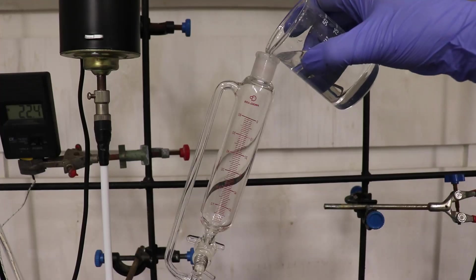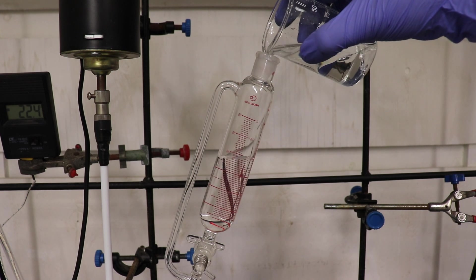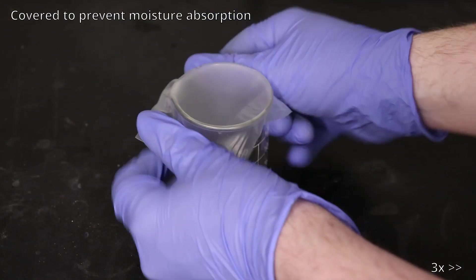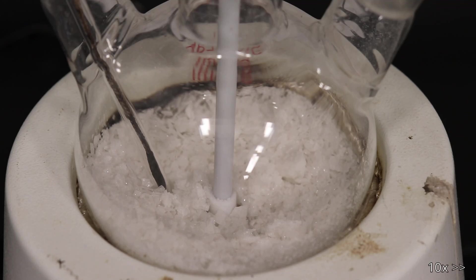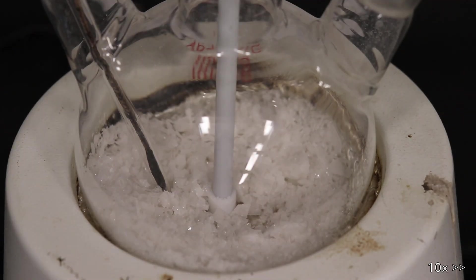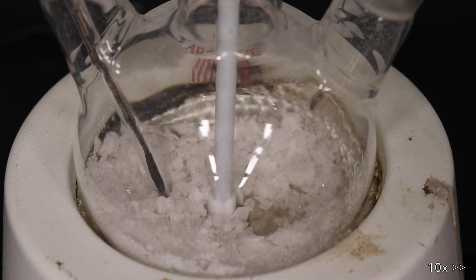Not all of the sulfuric acid was able to fit inside the funnel, so the remaining was put aside for later addition. The naphthalene was then melted and heated to a temperature of 160 degrees Celsius.